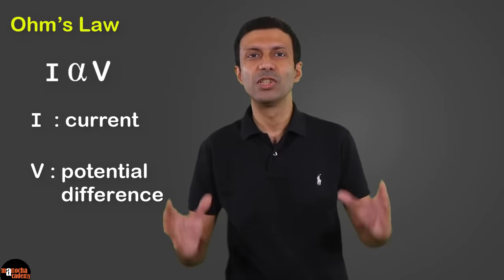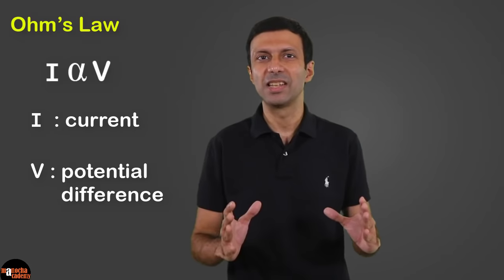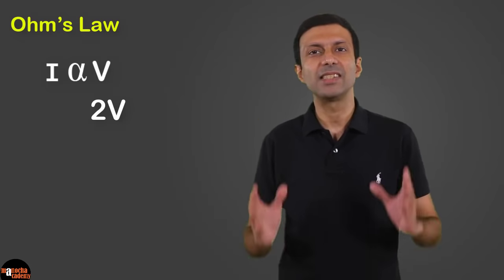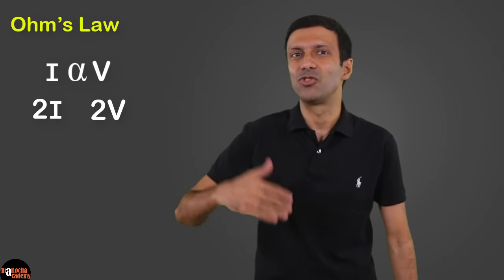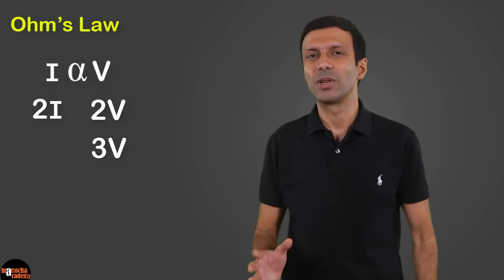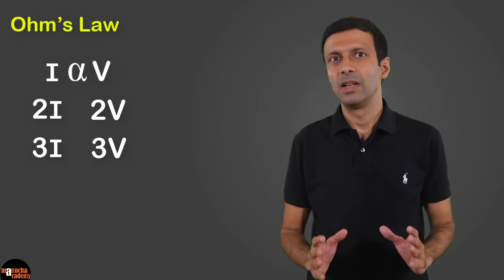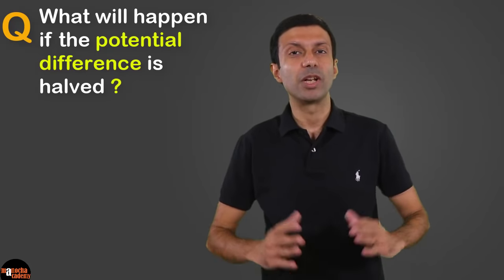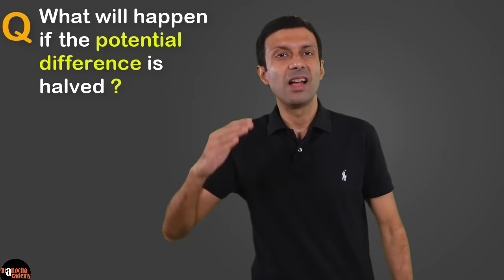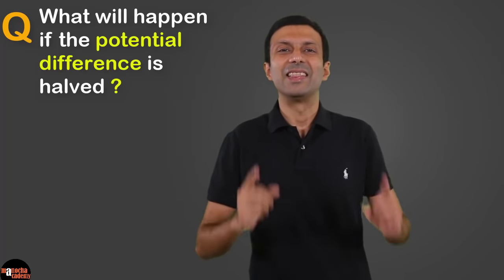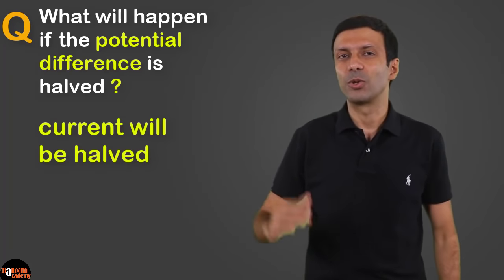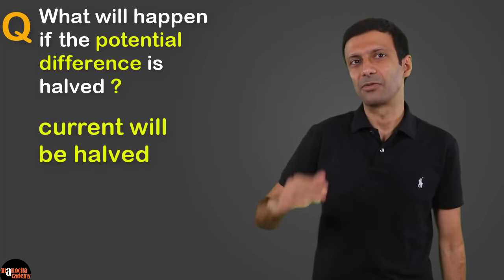A directly proportional relation means that if the potential difference is doubled, the current will also get doubled. If the potential difference is tripled, the current will also get tripled. Similarly, if the potential difference is halved, the current will also get halved. So I is directly proportional to V.